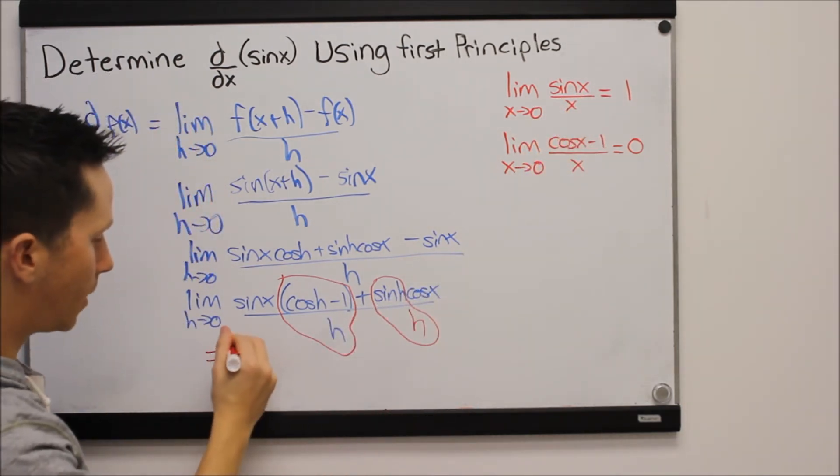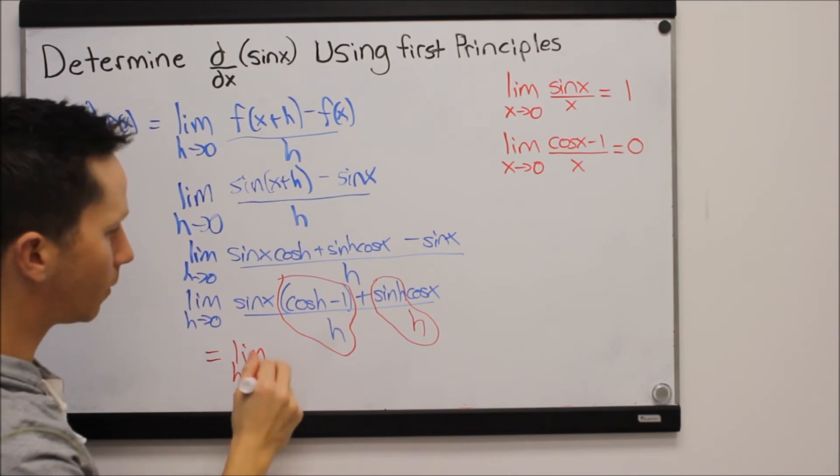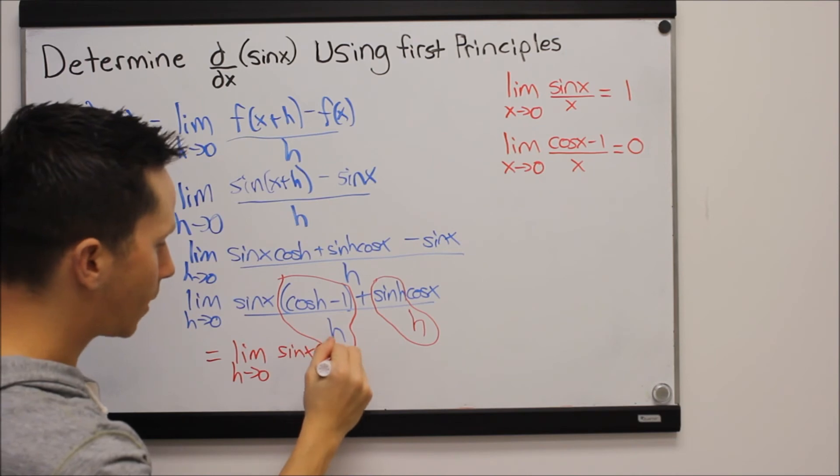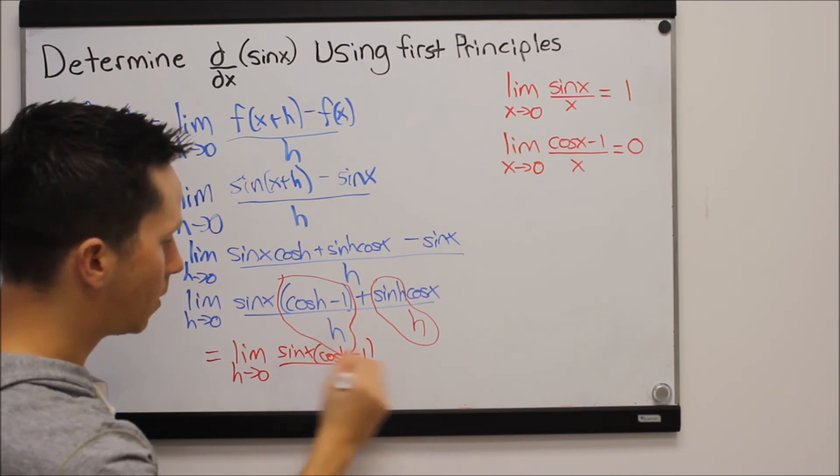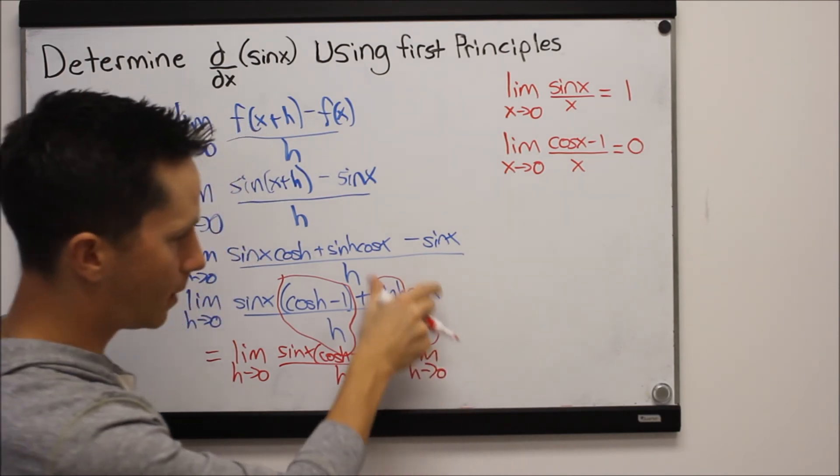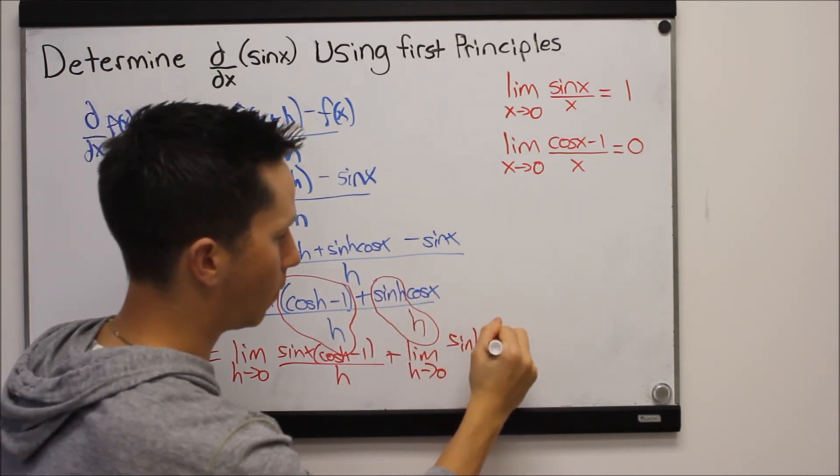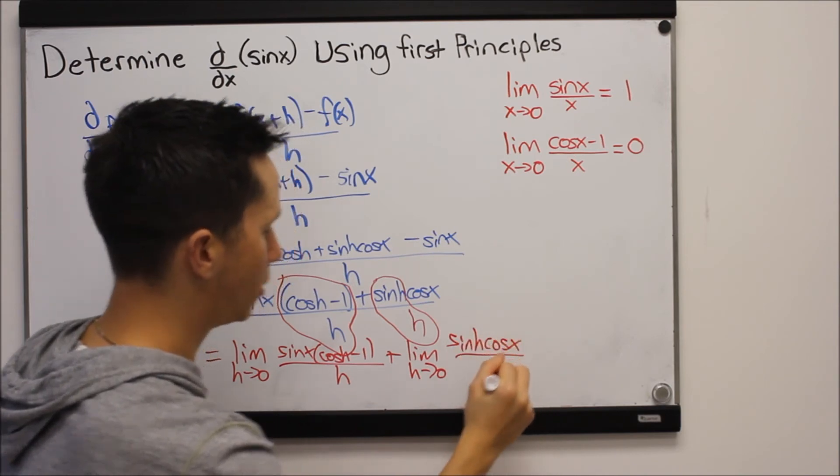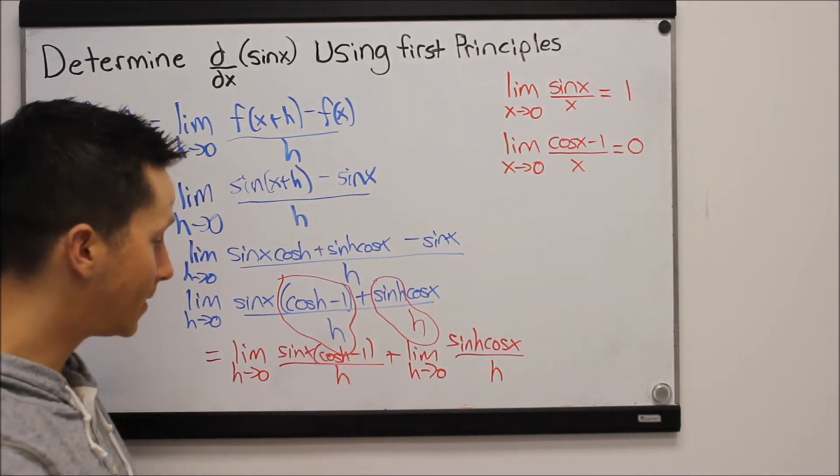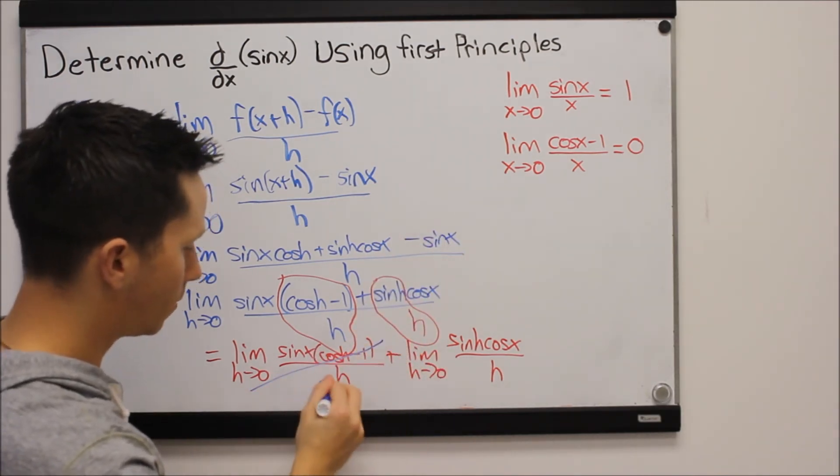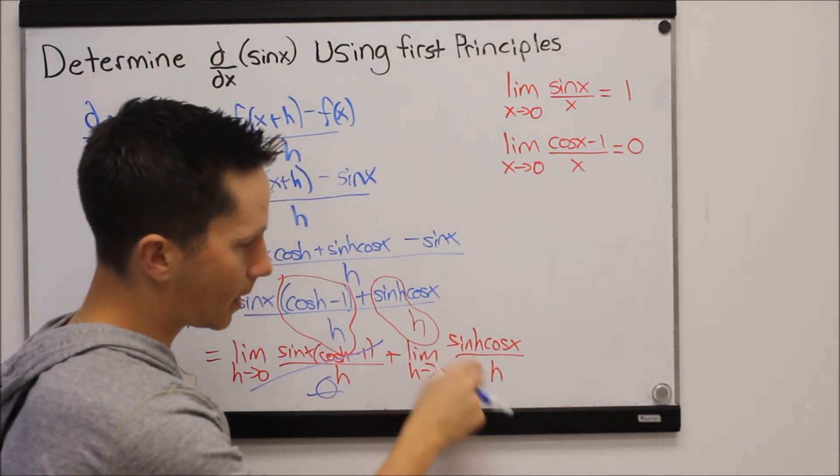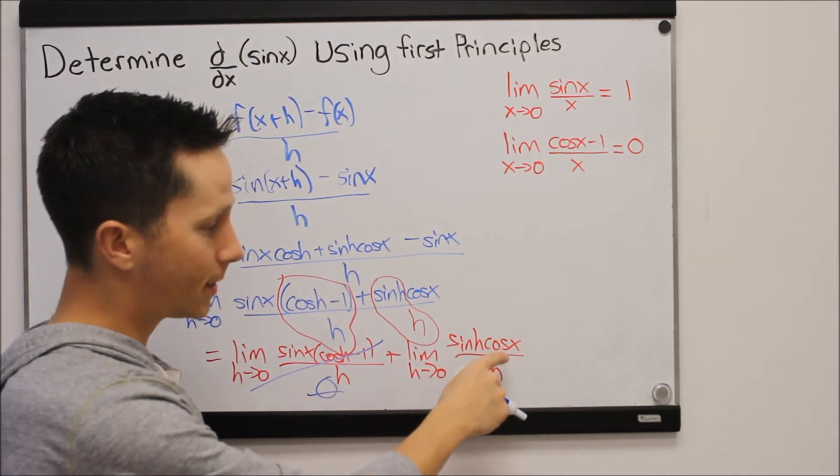So this becomes the limit as h goes to zero. Limit laws say we can break these two things up. So it'll be sine x times that cos h minus one over h plus the limit as h goes to zero of this part, sine h cos x over h. We just said that cos h minus one over h, that's zero. So this whole thing is zero. Don't have to worry about that.